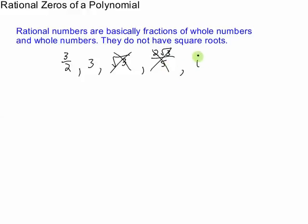The complex number i, that's the square root of negative one, so that's not a rational number. Any complex number, like two plus i, that's a complex number because it has i, that is also not a rational number. So rational numbers are whole numbers and fractions of whole numbers.